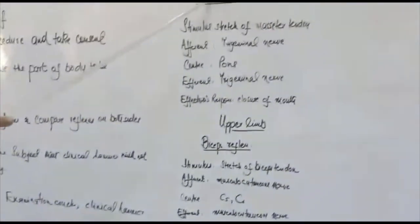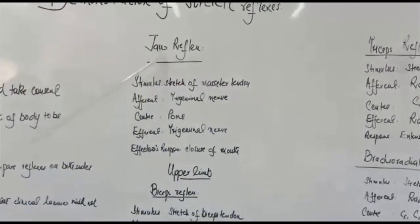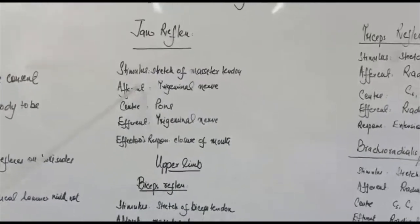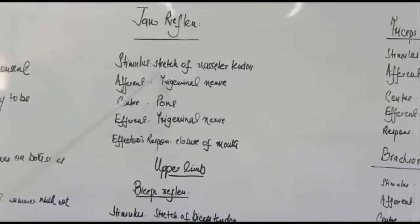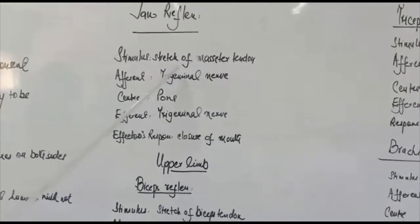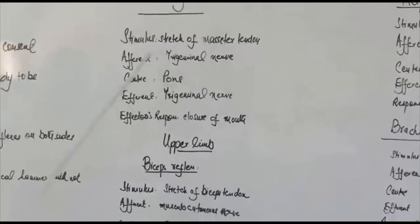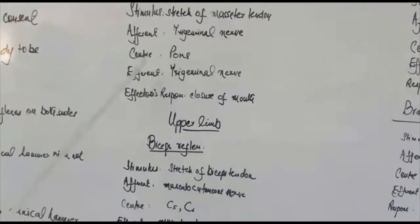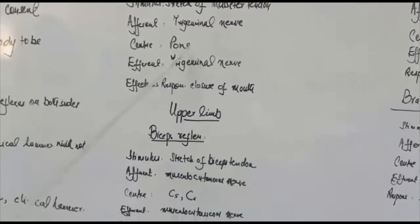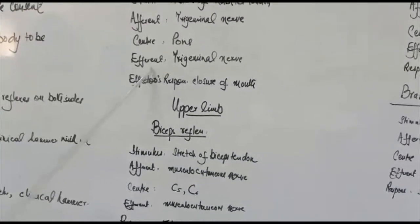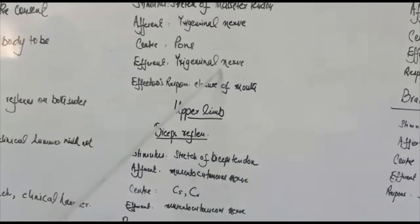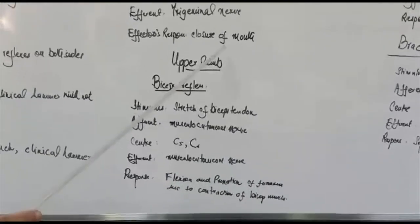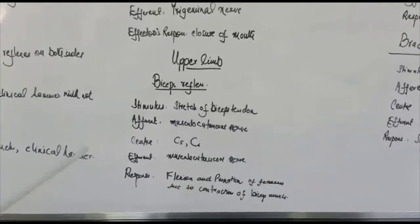We start our practical with the jaw reflex. The stimulus in the jaw reflex is the stretch of the masseter tendon. The afferent is the trigeminal nerve, the center is the pons, the efferent is the trigeminal nerve, and the effective response is closure of the mouth.